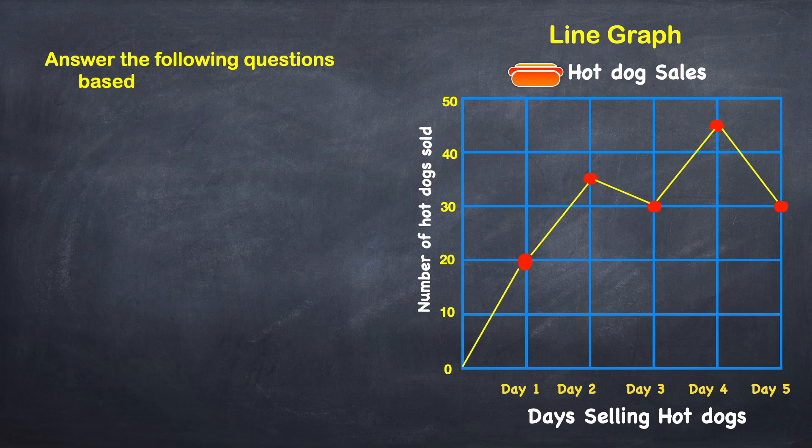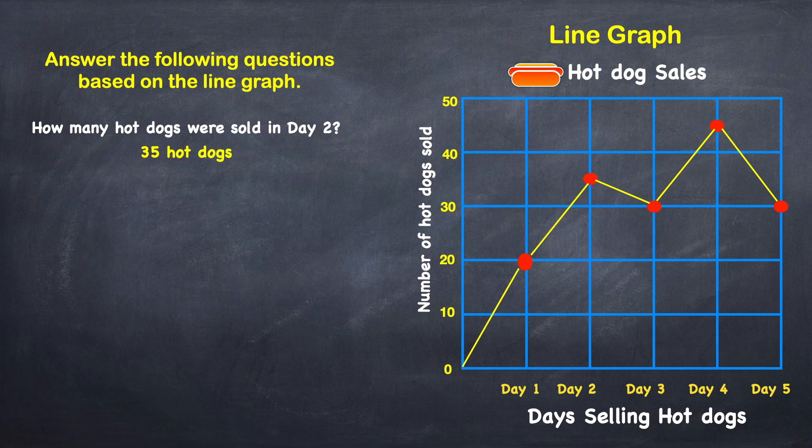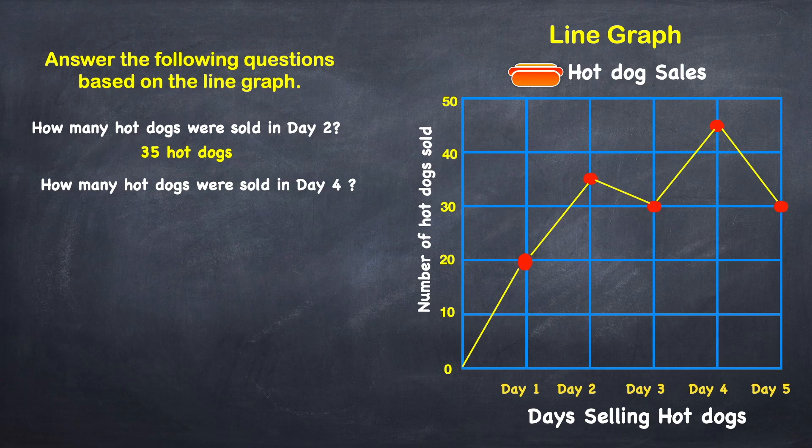Answer the following questions based on this line graph. How many hot dogs were sold in day 2? 35 hot dogs. How many hot dogs were sold in day 4? 45 hot dogs.